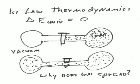Now, consider a nice simple case. We have two flasks connected by a tube with a stopcock in the middle. One of the flasks is full of gas at some reasonable pressure, and the other is under a vacuum. What's going to happen when we open the valve?